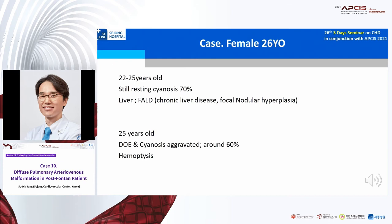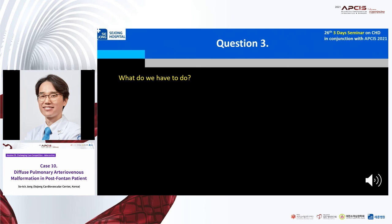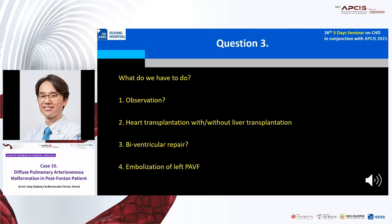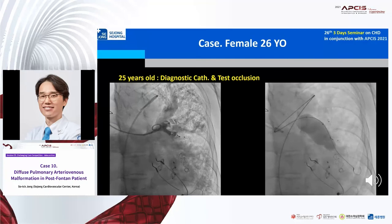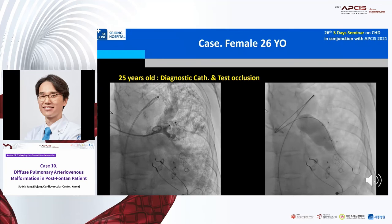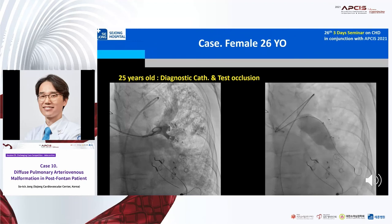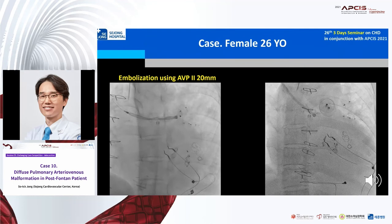But recently, her saturation aggravated to 60%, and she complained of dyspnea on exertion and frequent hemoptysis. So, what did we have to do? Options were observation, heart transplantation without liver transplantation, biventricular conversion, or embolization of left AVM. She and her parents did not want aggressive treatment, so we did embolization. After LPA angioplasty, we did test occlusion using a Tyshak 22 mm balloon for 10 minutes — CVP did not change and saturation increased up to 90%. So we did embolization using a Vascular Plug 20 mm without any complication.